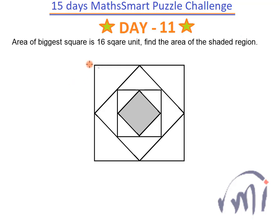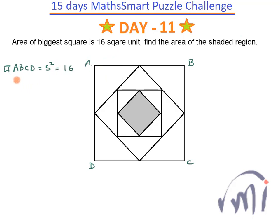If I name this outer square as ABCD, then the area of ABCD will be equal to S squared, where S is the length of one side of the square. This is given as 16 square units, which means each side of that square is the square root of 16, that is 4 units.